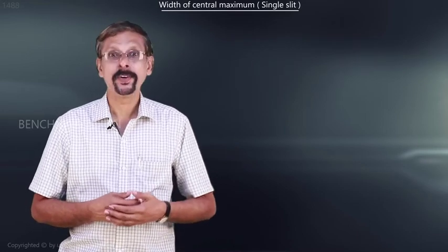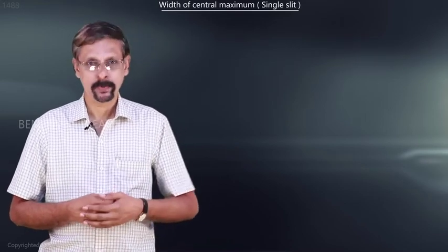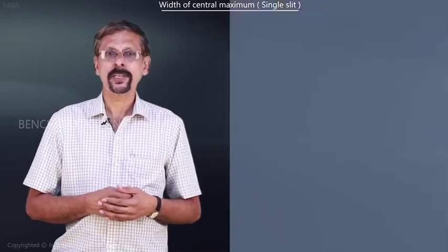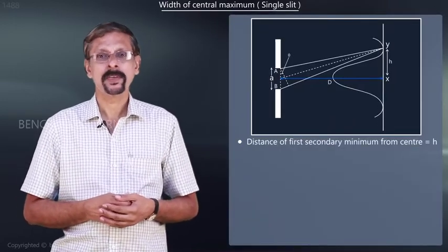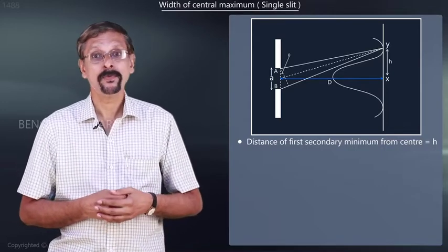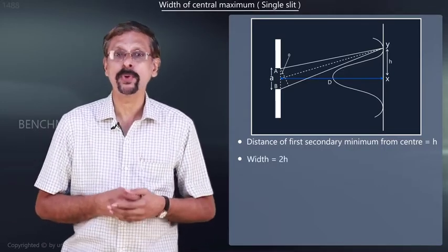Now, we will find the width of the central maximum. Let the distance of the first secondary minimum from the central maximum be h. Then, the width of the central maximum is given by 2h.